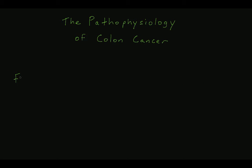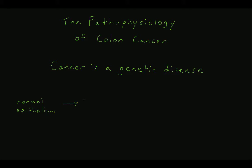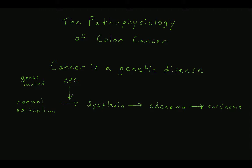As with all cancers, colon cancer is a genetic disease that involves activation mutations of proto-oncogenes and inactivation mutations of tumor suppressor genes. Initial mutations in cells of the colonic mucosa can lead to dysplasia, then adenoma formation, with subsequent mutations leading to carcinoma. This process has been studied extensively at a cellular level with several genes implicated in the pathogenesis. Germline mutations in any of these genes will predispose an individual to the formation of colon cancer and explain the higher risk of colon cancer in familial cancer syndromes.